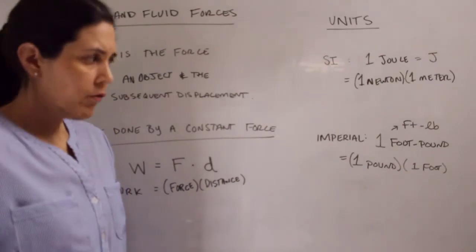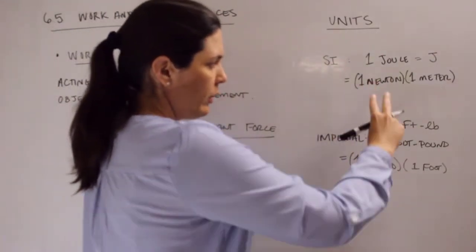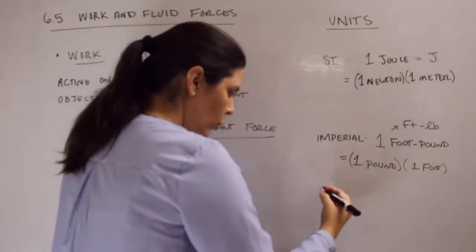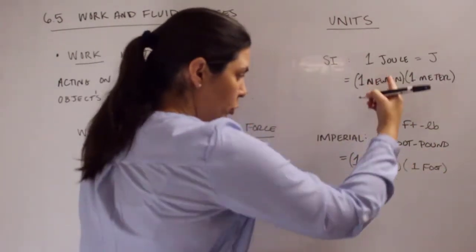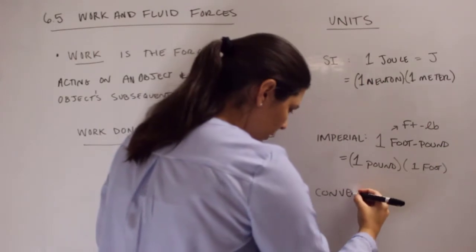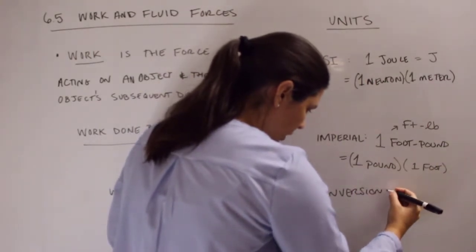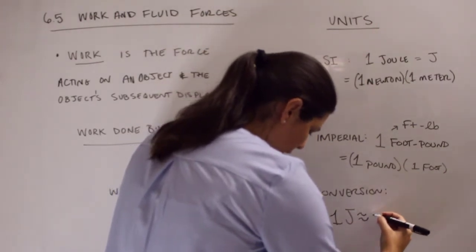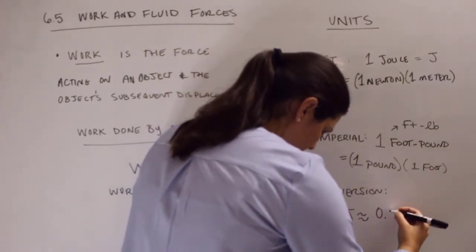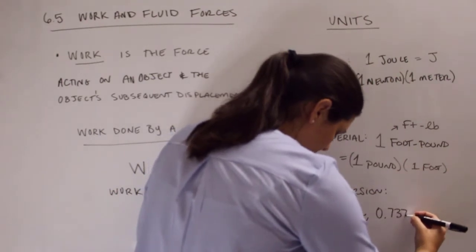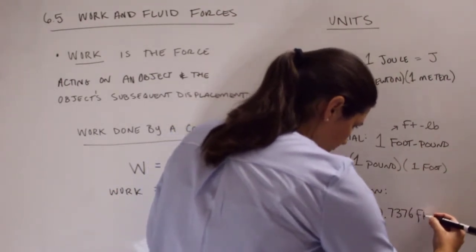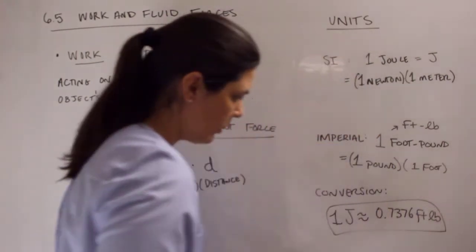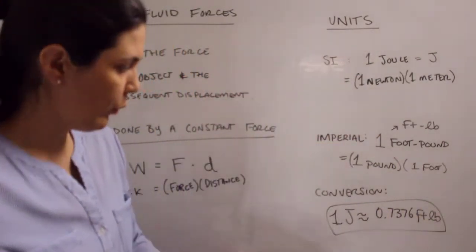And then if you want to convert between the units, you can work individually with converting like newtons to pounds and meters to feet. Or if you want the actual conversion from joule to foot pound, I'll give it to you here. And this is just an approximation. But 1 joule is about 0.7376 foot pounds. So if we wanted to change our units for work, we can use this conversion.